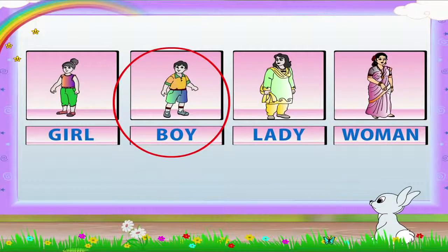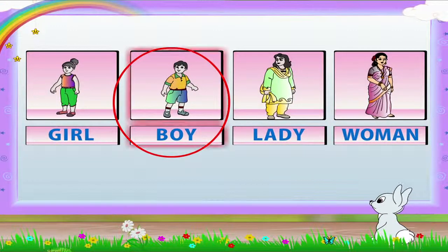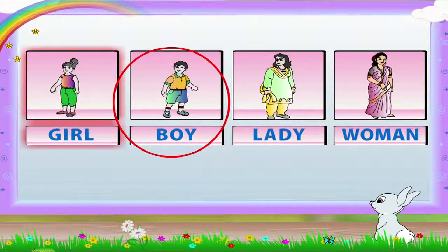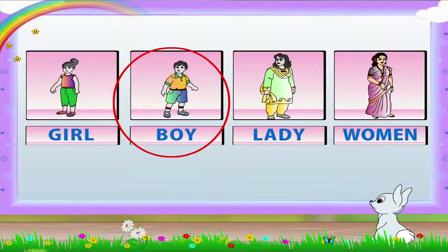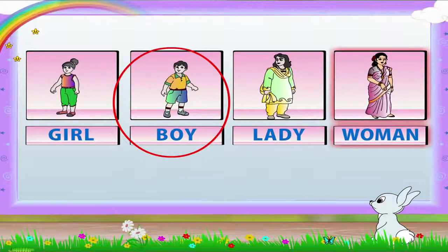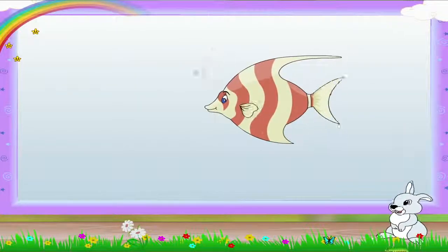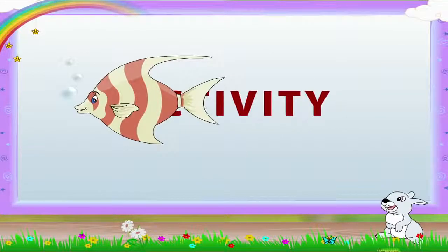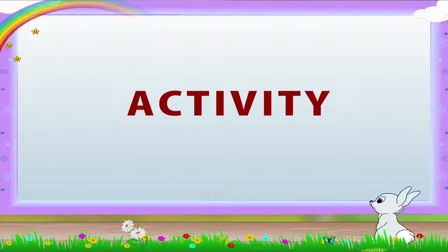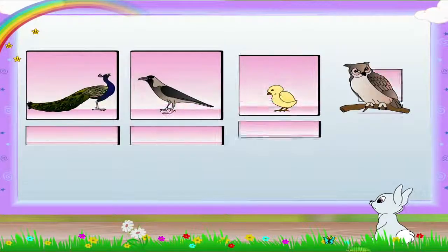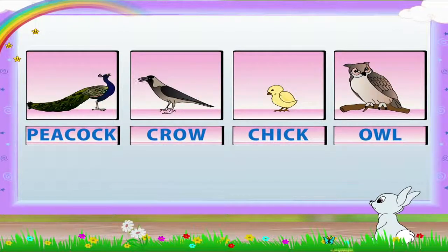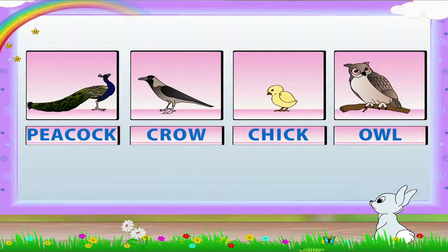You were very quick, Rainbow! It is boy. Girl, lady, and woman all belong to the feminine gender. That was easy! Let's do another activity. Here are some more sets of pictures. Let us find the odd one and cross it out.